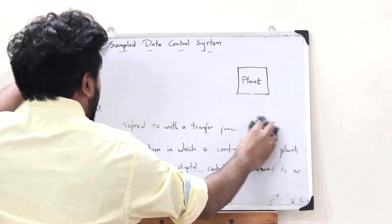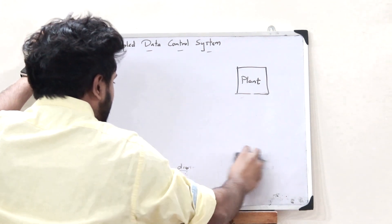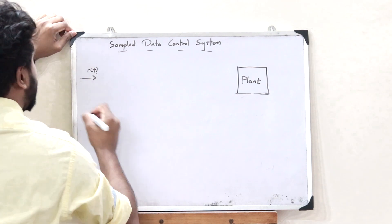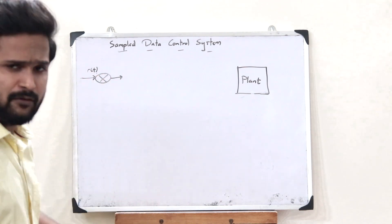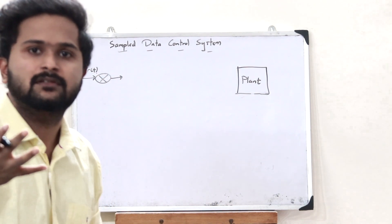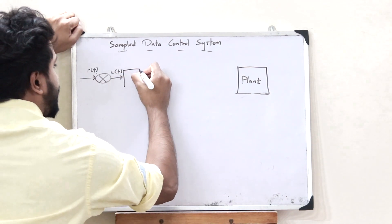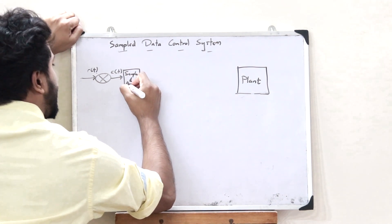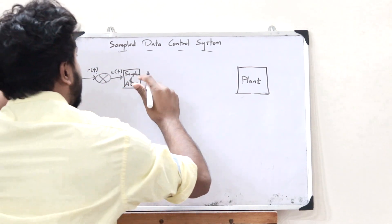Let us draw a block diagram of this particular sampled data control system. First, we have an input R of T, which is an analog input. We have an error signal E of T, and this signal is passed through a sampler and an analog to digital converter — that is, an ADC.